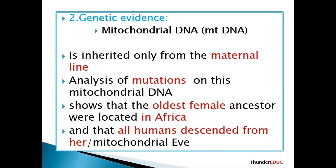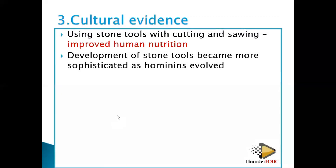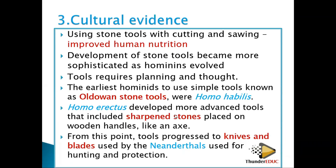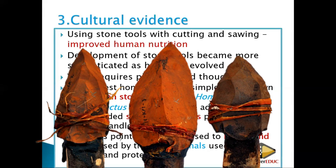For cultural evidence: the use of tools for cutting and sewing improved human nutrition. The development of stone tools became more sophisticated as hominins evolved — even the tools were becoming more advanced. These tools required planning and thought, which means they required a bigger brain. This included sharpened stones placed on wood to make spears.